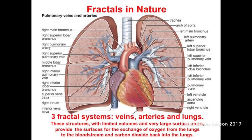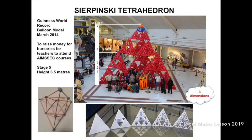These three fractal systems — the veins, arteries, and lungs — demonstrate structures with limited volumes and very large surface areas. They provide the surfaces for the exchange of oxygen from the lungs to the bloodstream and carbon dioxide back into the lungs. These are examples of three-dimensional fractals.